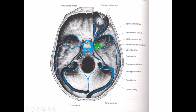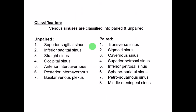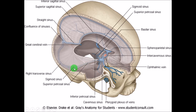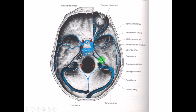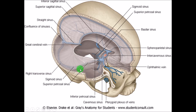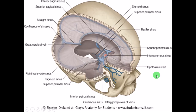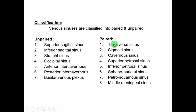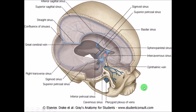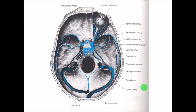The cavernous sinus is the largest and most important, into which many sinuses drain. The sigmoid sinus continues at the superior petrosal sinus, and below that is the inferior petrosal sinus on either side. The sphenoparietal sinus is on either side, and there is also the petrosquamous sinus and meningeal sinus - all sinuses present within the cranial cavity.